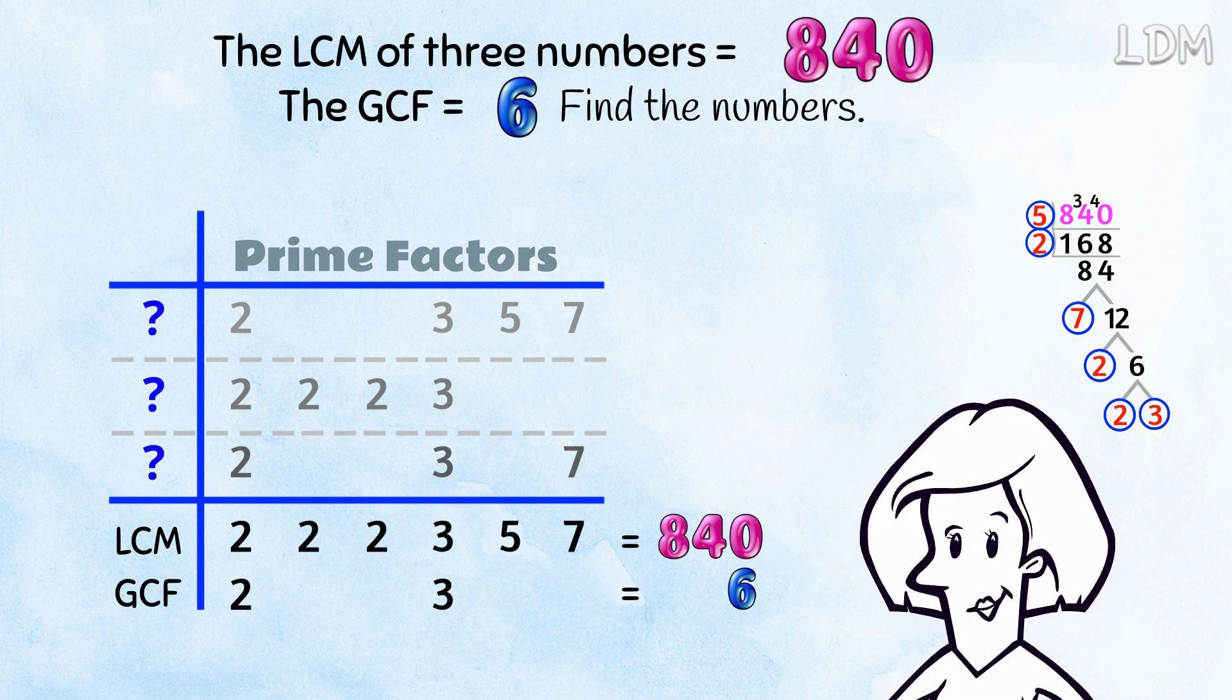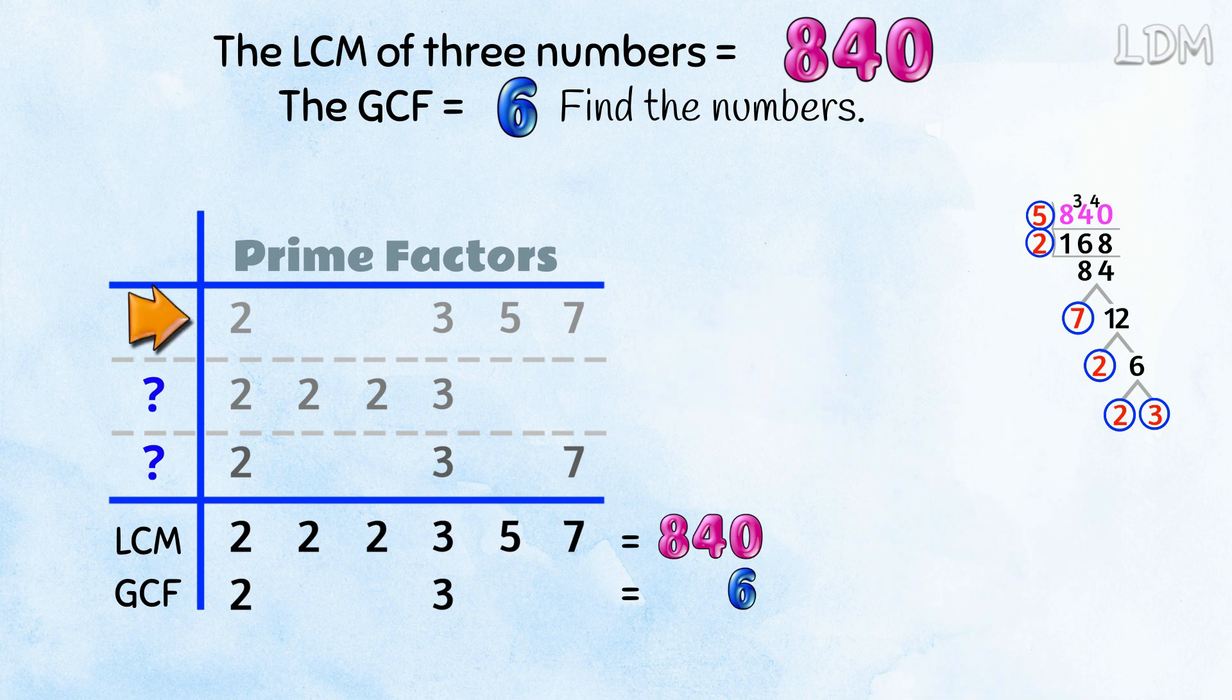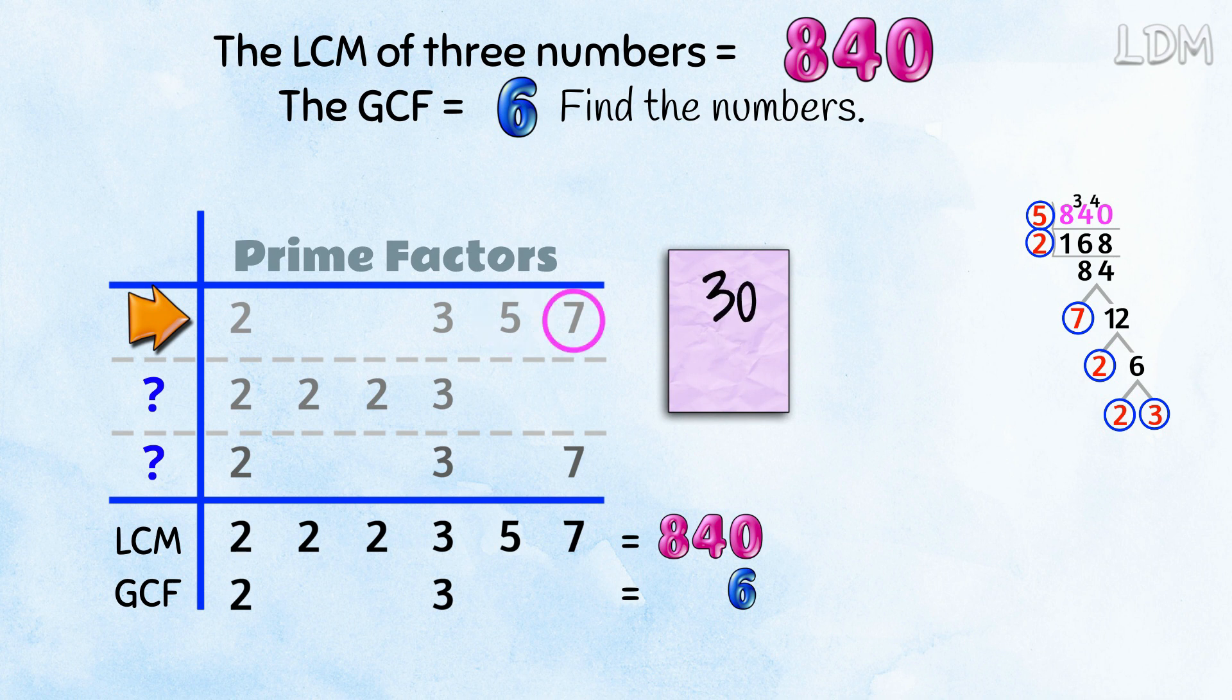Now, let's find out what numbers we've got. Multiply a row of primes to find the number. Here, 2 times 3 is 6, times 5 is 30, and times 7. 30 times 7. 3 7s are 21. And put in a 0 because we're multiplying by 3 tens. 210.